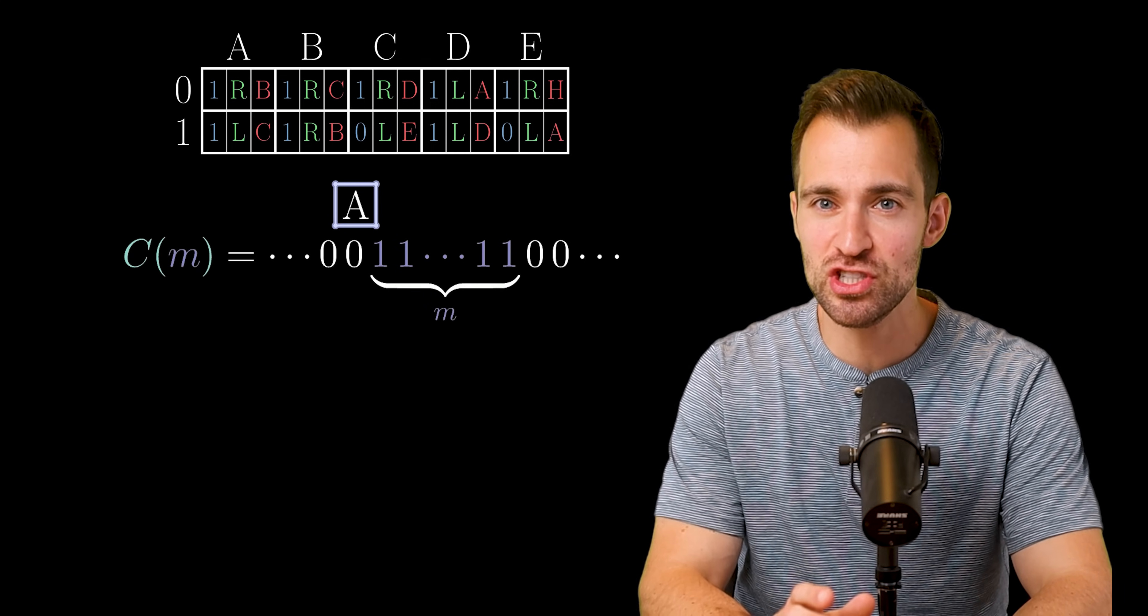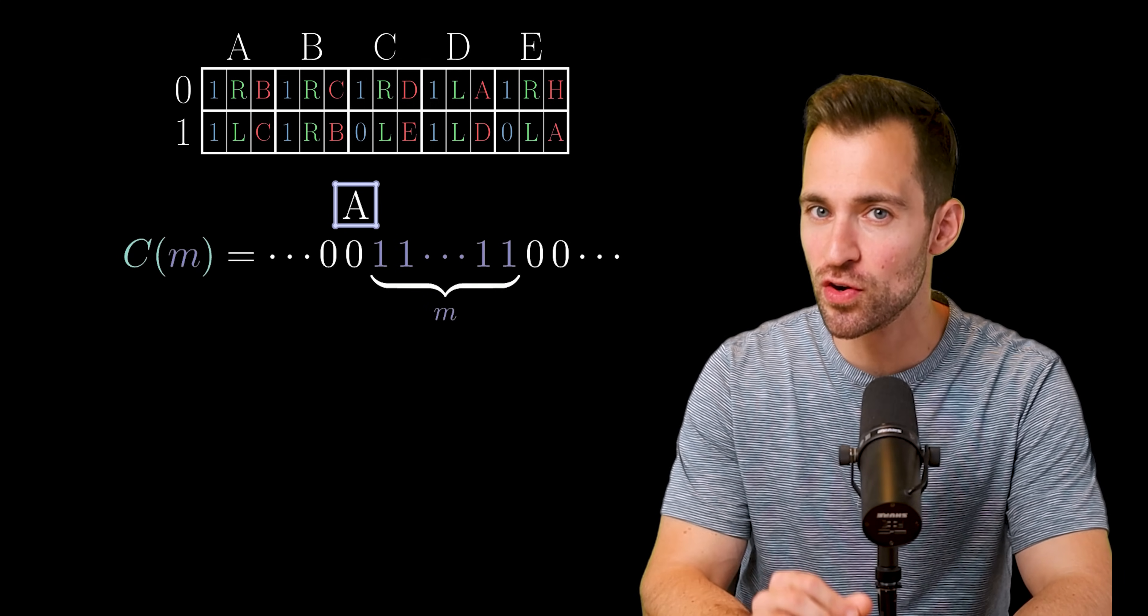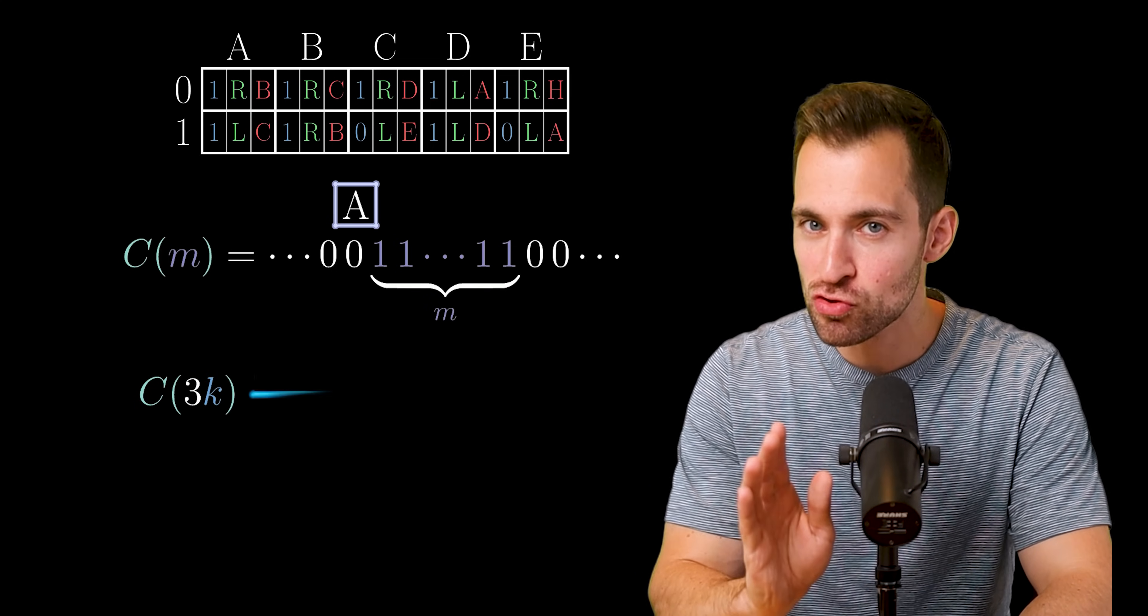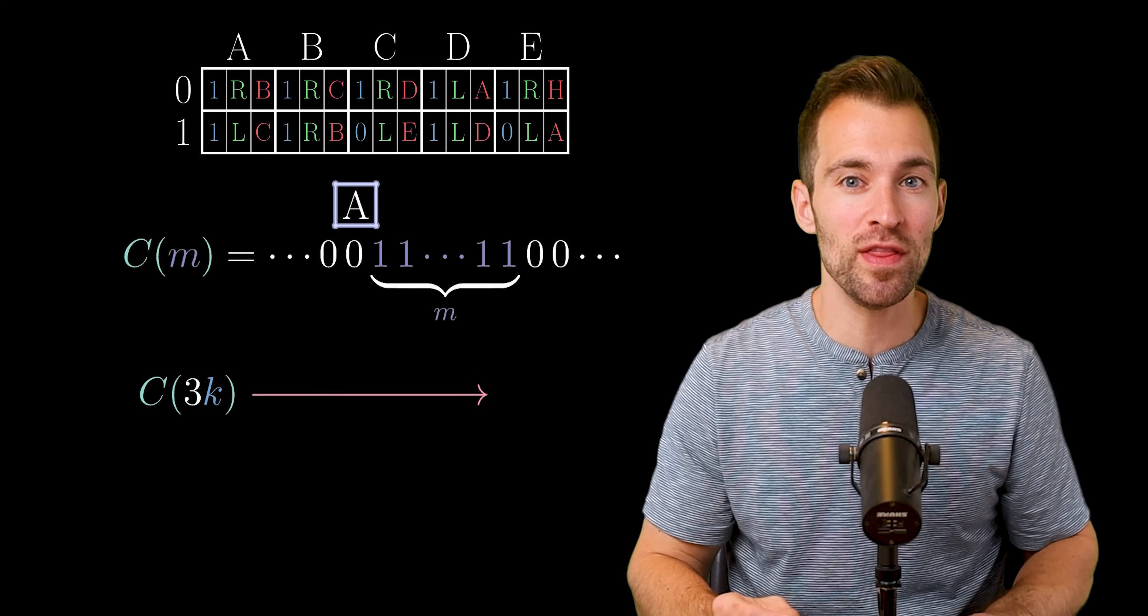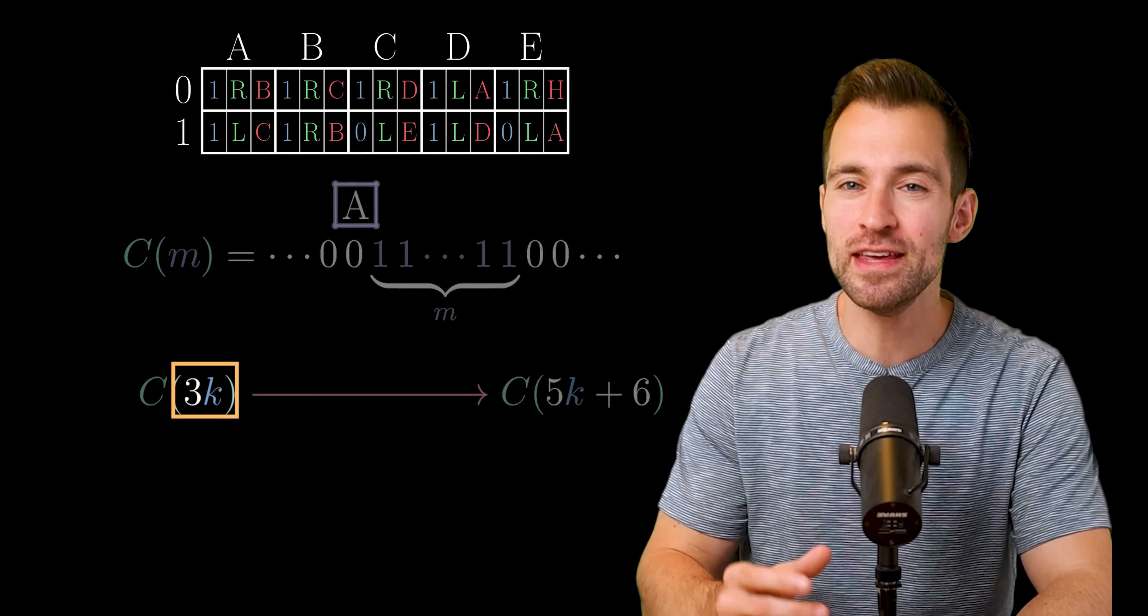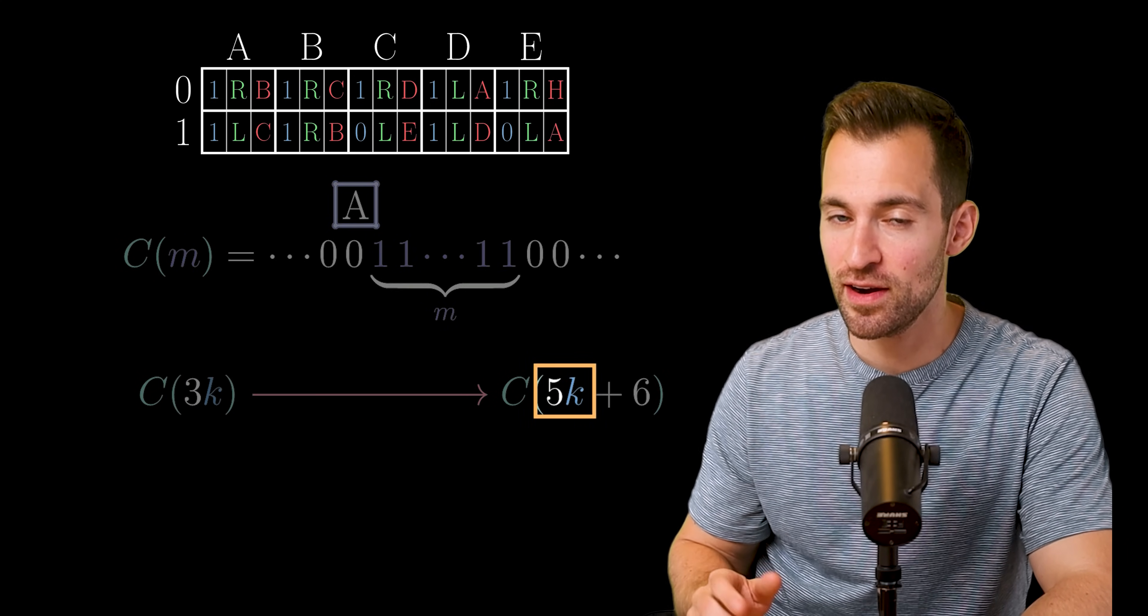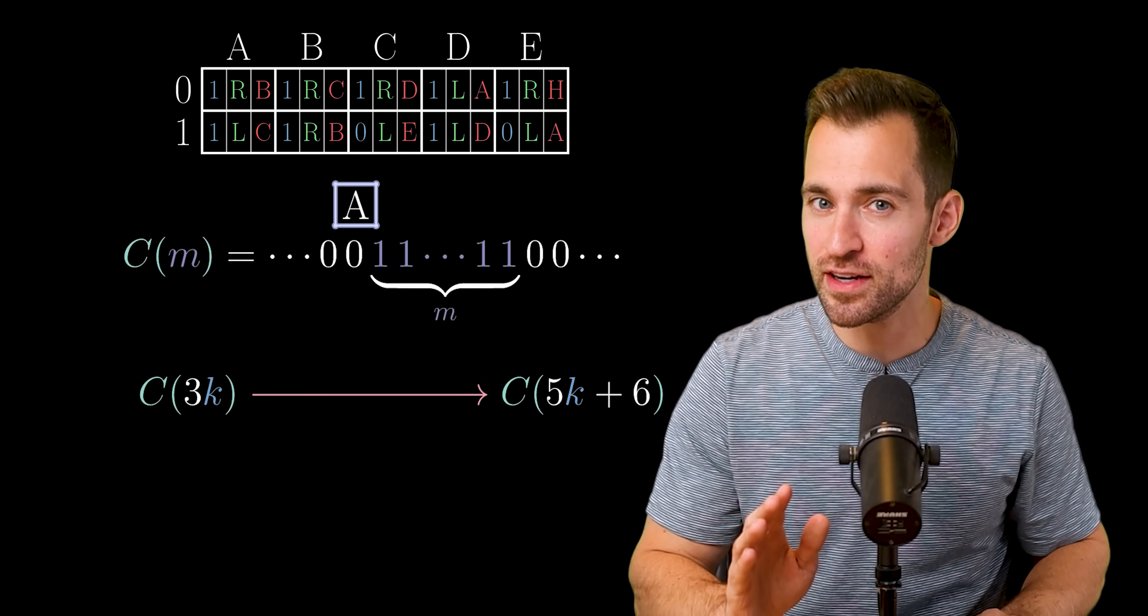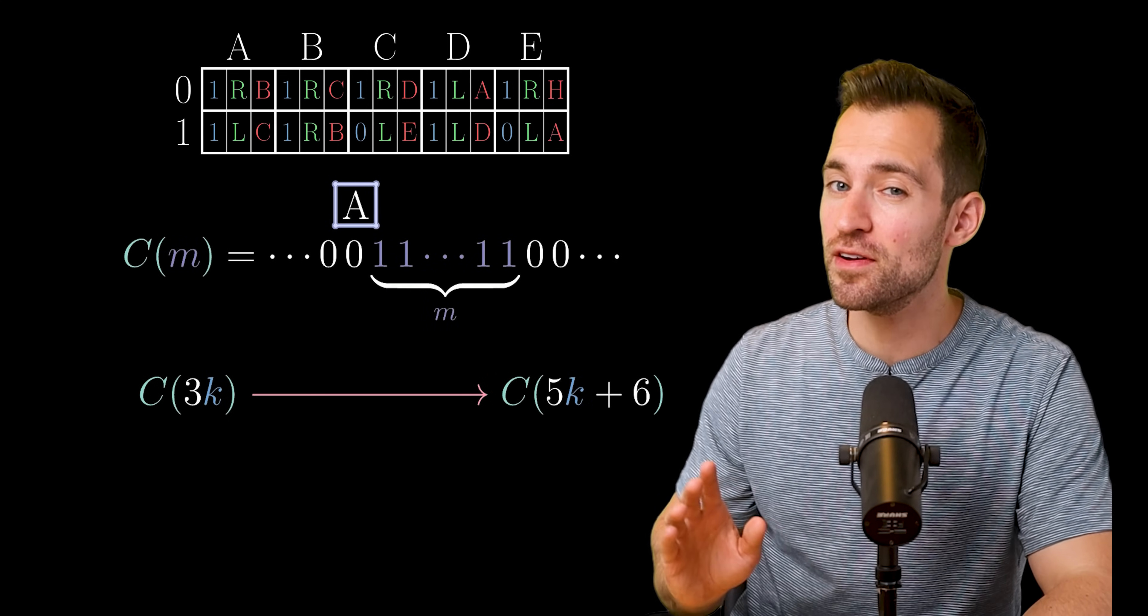And then there are infinite zeros going off to the left and to the right. Also, the machine is in state A above the zero cell on the left side. So this function represents a specific configuration of the tape and machine. Now, what the five-state Busy Beaver machine does depends on how many ones are in the string. If the number of ones is a multiple of three, it'll transform that tape into one that has this many ones. So the three multiplier became a five multiplier, and we added six. Also, doing this requires a lot of steps, in particular, this many.